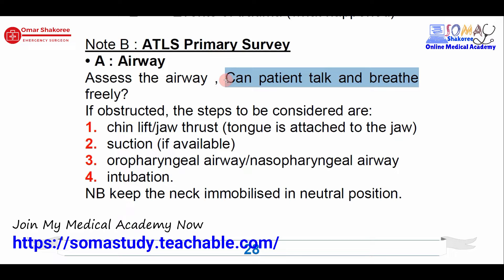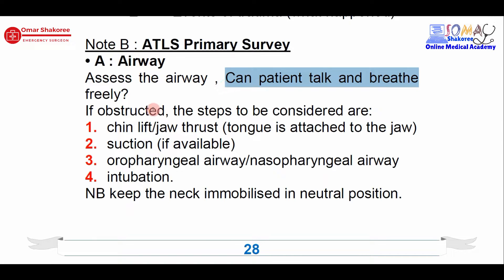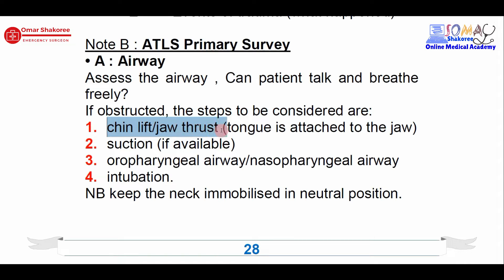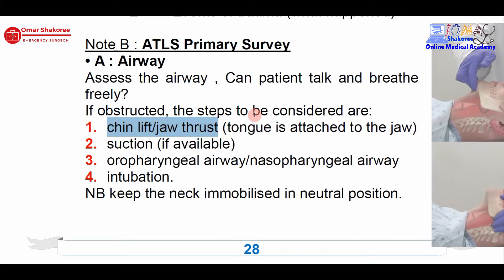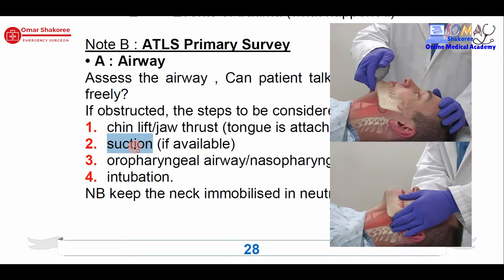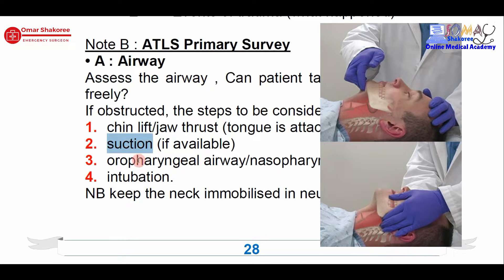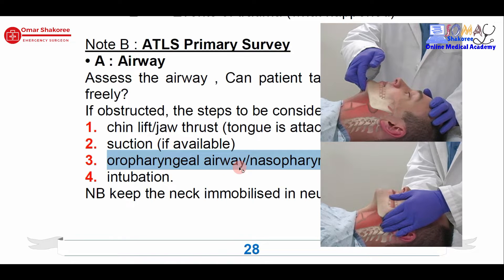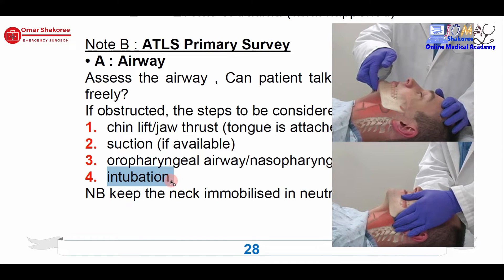If the patient cannot talk, immediately consider this patient as having an obstructed airway. Immediately make the chin lift and jaw thrust — I will put a picture here. Chin lift and jaw thrust. Ask for suction — ask the nurses and other doctors for suction. Also secure the airway by putting an oropharyngeal airway, which is the rigid airway, or a nasopharyngeal airway, and lastly, intubation.